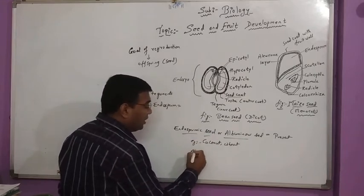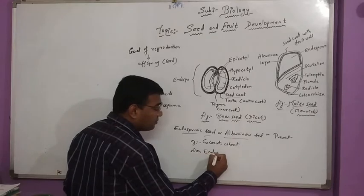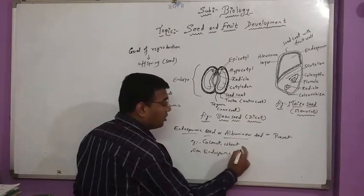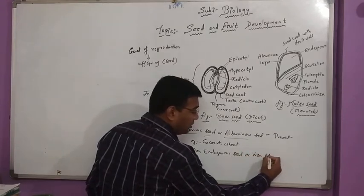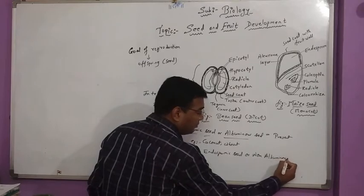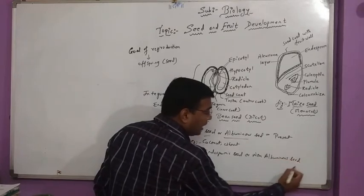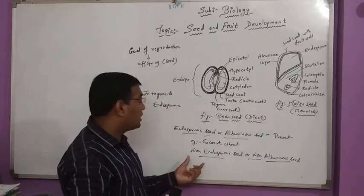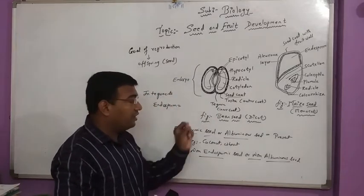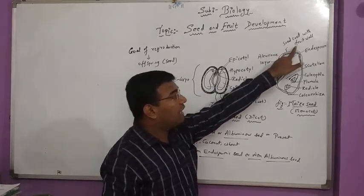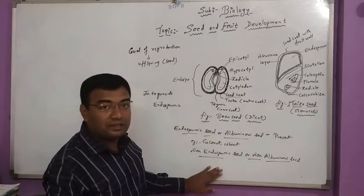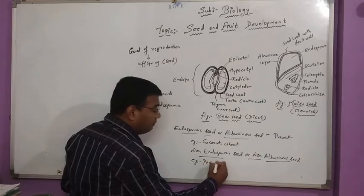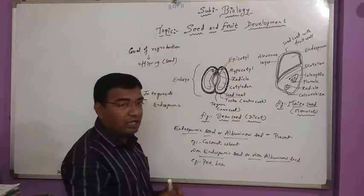When we are seeing about the non-endospermic seed, we also call them as non-albuminous. In this kind of seed, the endosperm is used up for the development. And this kind of seeds are generally having the outer coat in the form of the seed coat as well as in the form of fruit wall. The examples are pea and bean. This you have to mention in exam, the examples. Very important. Pea and bean are examples of non-albuminous.